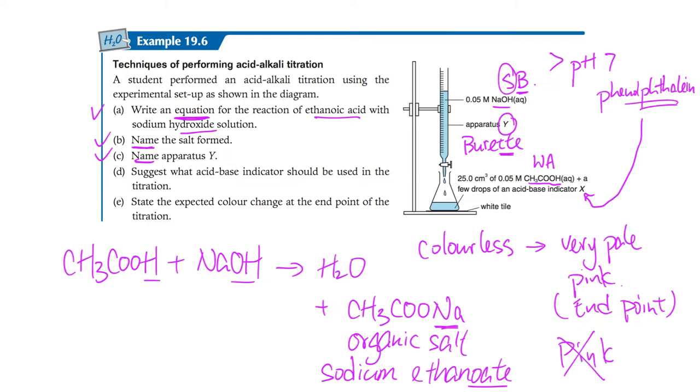D, suggest what acid-base indicator we have to use. Just like we mentioned because we're having a strong base and weak acid combination. So we have to choose it carefully. So that should be phenolphthalein. Potential spelling, H-T-H and A and E right there. And there's also an L. Three parts, you always make mistakes.